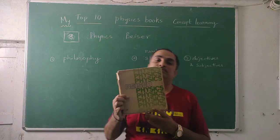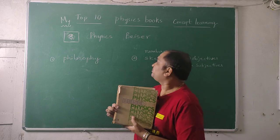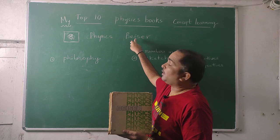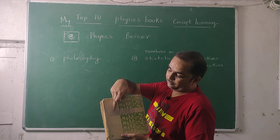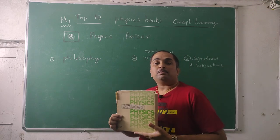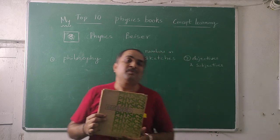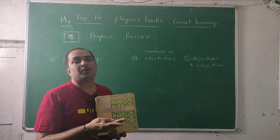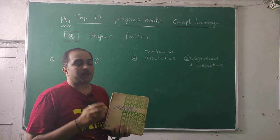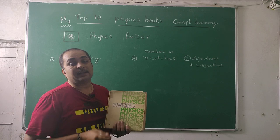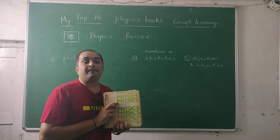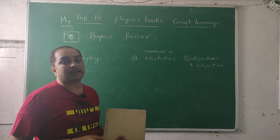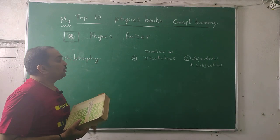My third favorite book is simply titled Physics, and it will be written as 'Physics' by the scientist — the author is Arthur Bizer. He also has a separate book on modern physics, which is also very good. Physics has six parts: mechanics, heat and thermodynamics, waves and oscillations, electricity, optics, and modern physics. Bizer's exclusive modern physics book is worth reading as well. He is a good scientist, research scholar, and author.